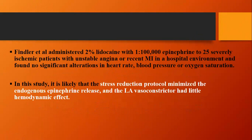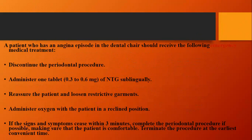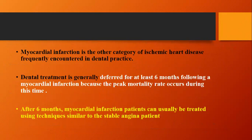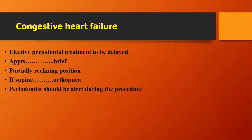When a patient has an ischemic attack in the chair, give 0.3–0.6 mg of nitroglycerin sublingually, reassure the patient, and ensure supplemental oxygen is available. Pain should subside within 3 minutes; nitroglycerin can be repeated every 3 minutes up to 4–5 times. If pain does not subside, this is a declared sign of myocardial infarction — call emergency services. If the patient reports a prior MI, wait at least 6 months from the last attack before starting periodontal procedures.